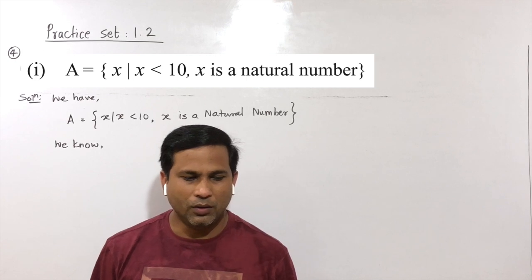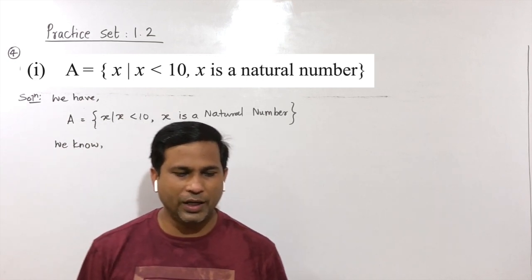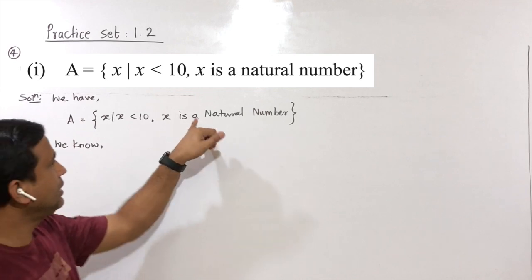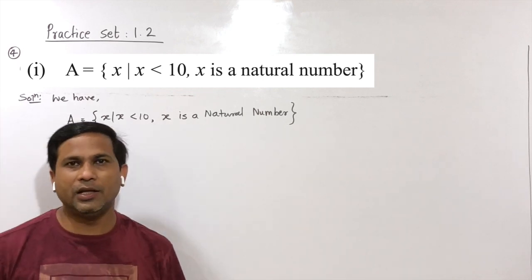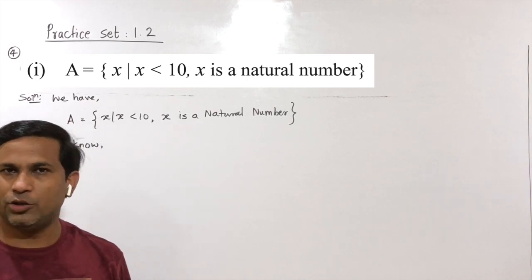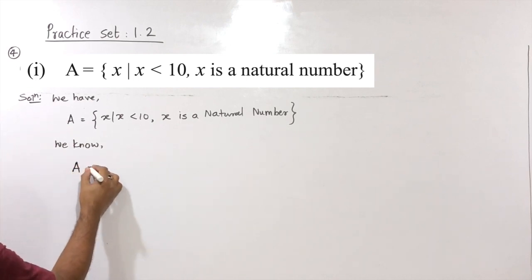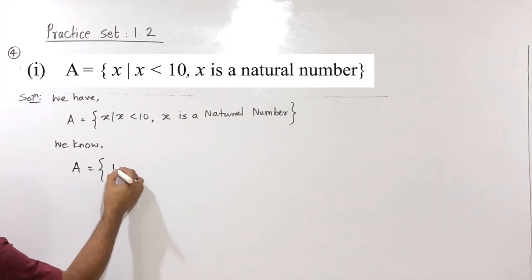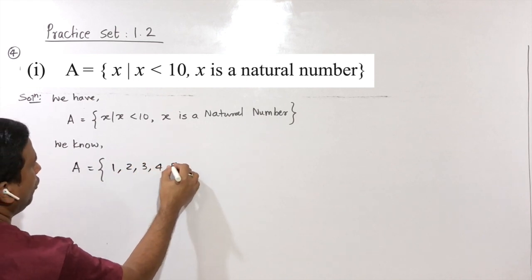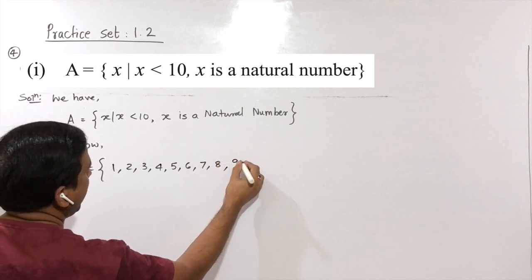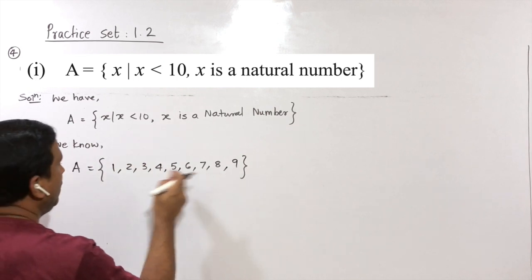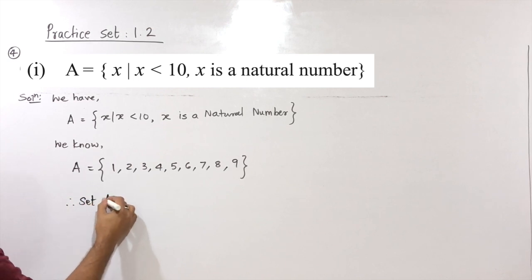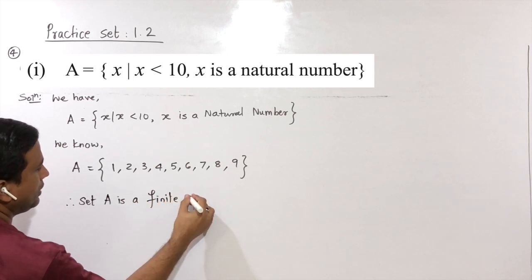Question number 4: write the reasons for which of the following sets are finite or infinite. First: A = {X such that X is less than 10 and X is a natural number}. Natural numbers start from 1, so we write 1, 2, 3, 4, 5, 6, 7, 8, 9 — all natural numbers less than 10. Since the set terminates, set A is a finite set.